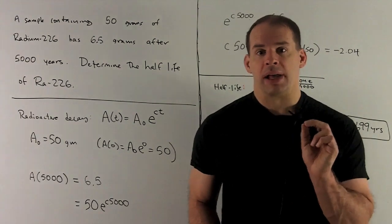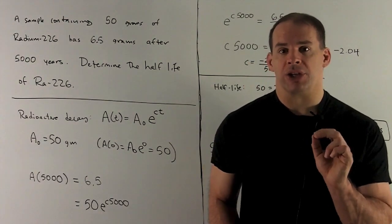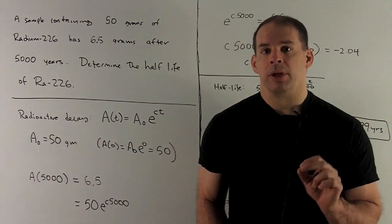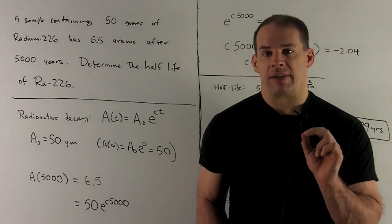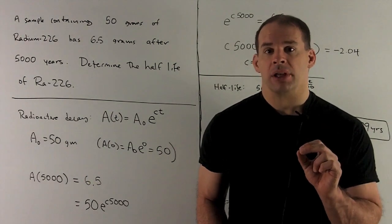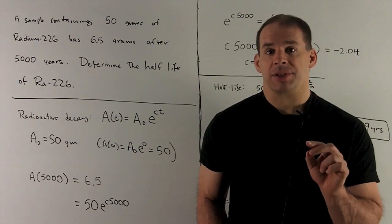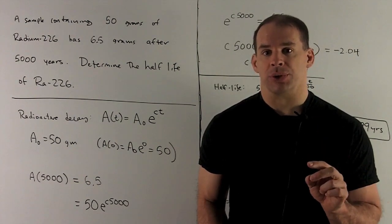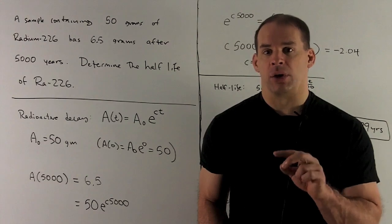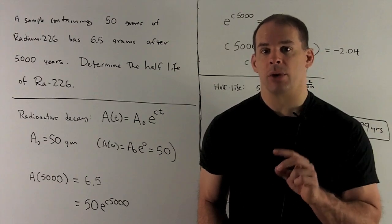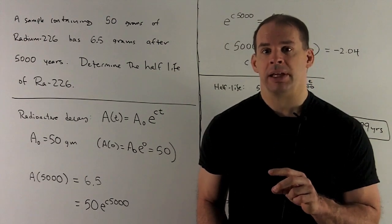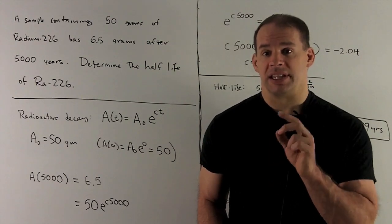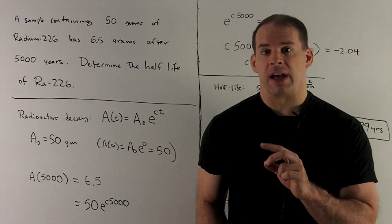Now what else do we have in our equation? At t equal to 5,000 we have 6.5 grams. So that says 6.5 is going to equal our A-zero, which we now know is 50, times e to the c times 5,000.